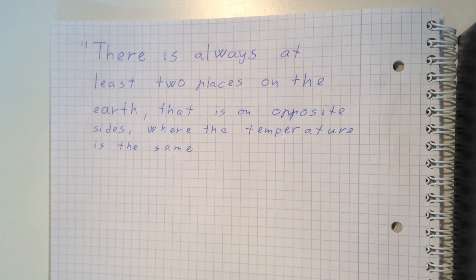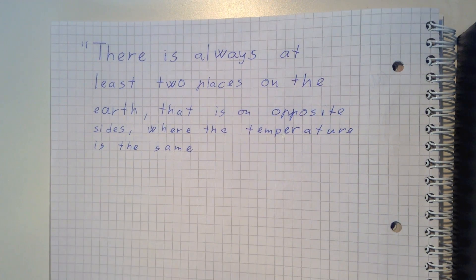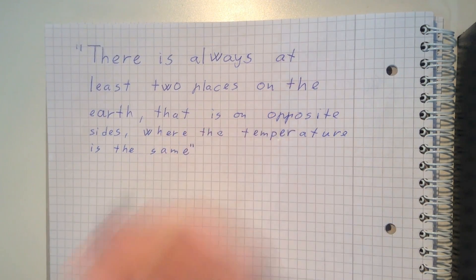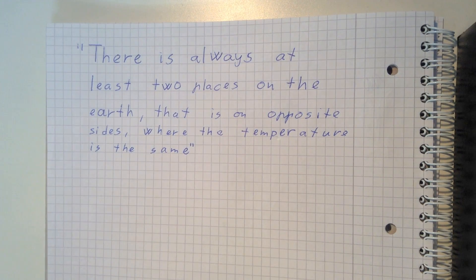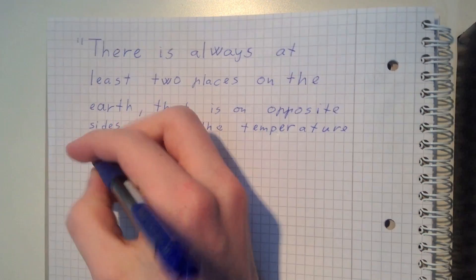You may have heard in your first calculus course that there are always at least two places on Earth that are on opposite sides where the temperature is the same. This can actually be proven by one of the theorems you learn in your first calculus course, which is called the Mean Value Theorem, often called MVT.